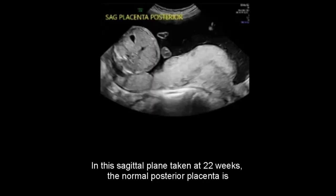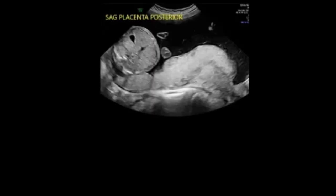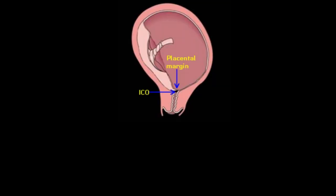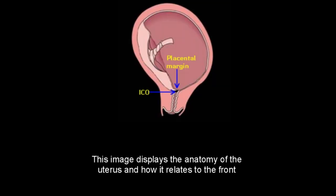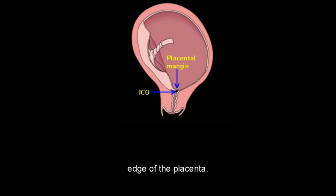In this sagittal plane taken at 22 weeks, the normal posterior placenta is associated with a uterine contraction. This image displays the anatomy of the uterus and how it relates to the front edge of the placenta.